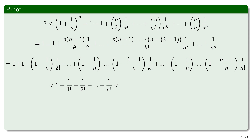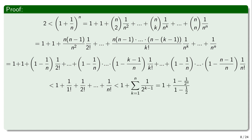Since each coefficient of 1/k! is strictly positive but no more than 1, if we replace each coefficient by 1 then the resulting sum is strictly bigger than our original sum. So we have an upper bound: our sequence is less than the sum of 1/k! from k = 0 to n.